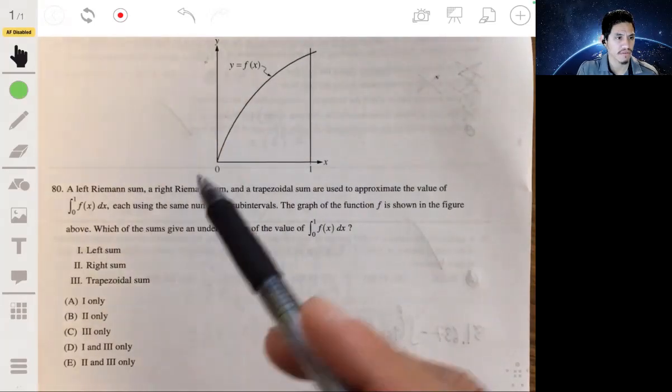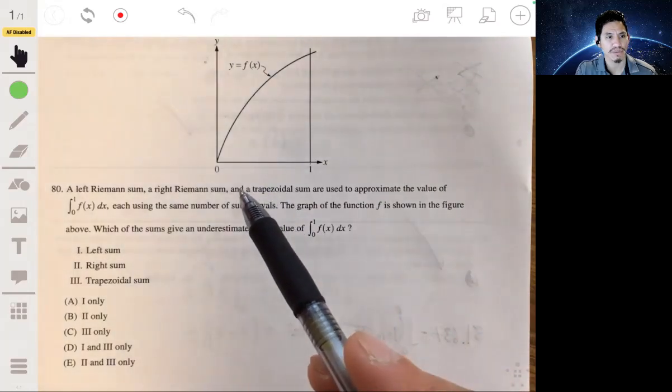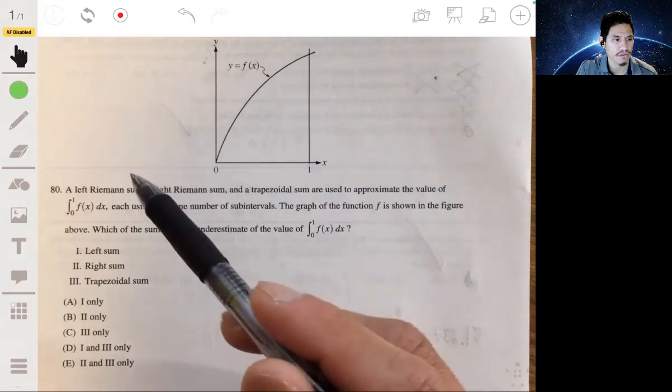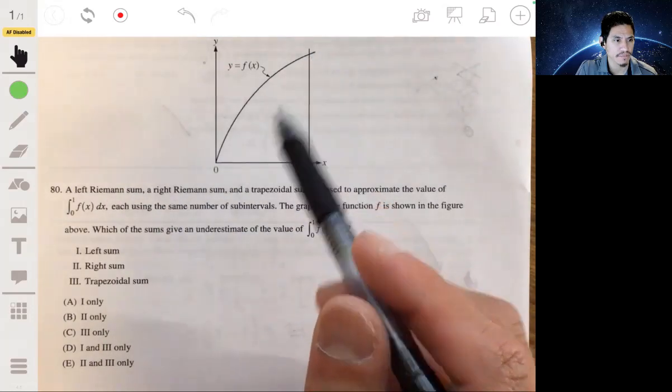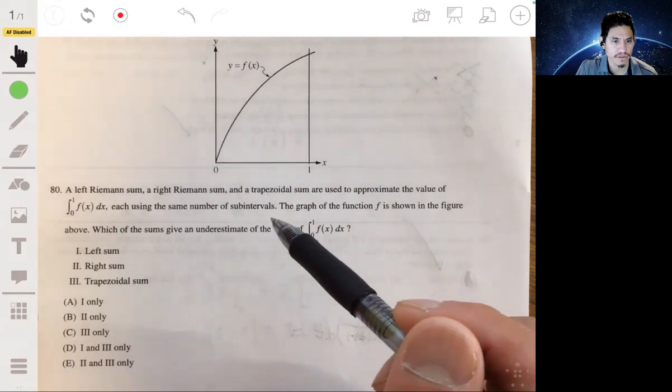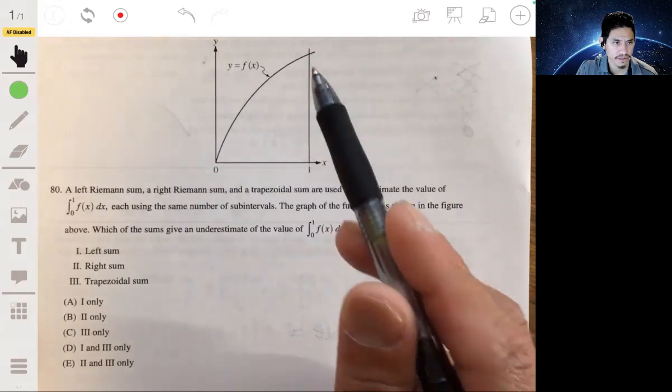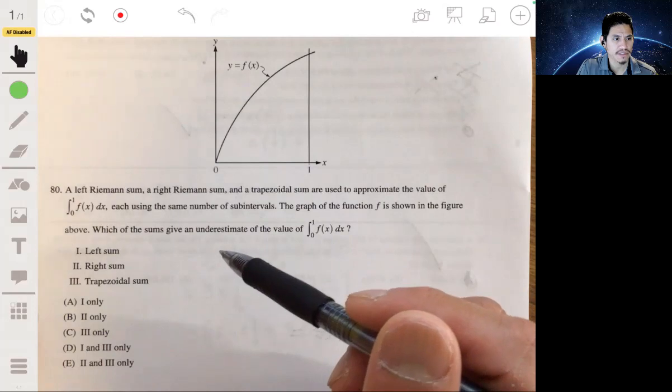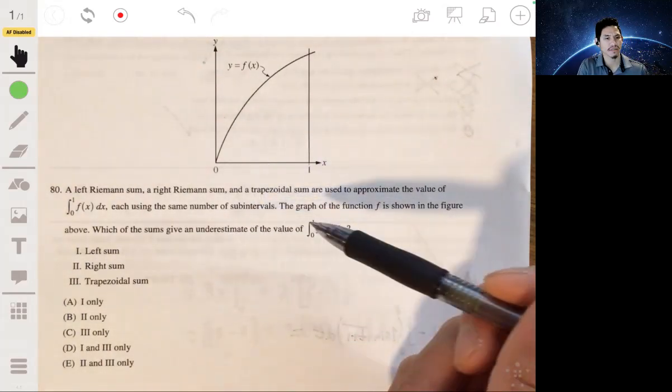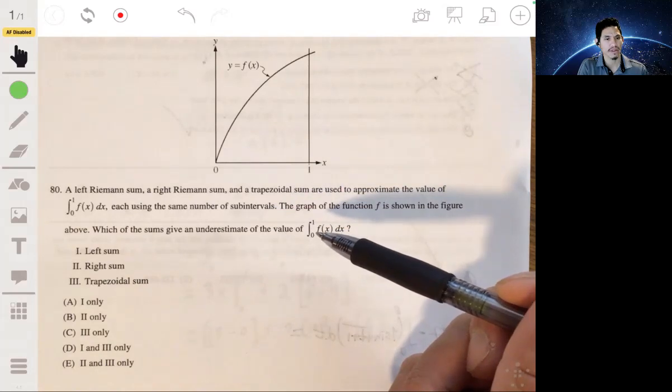All right, so problem 80. We have a left Riemann sum, a right Riemann sum, and a trapezoidal sum are used to approximate the value of the integral from 0 to 1 of f of x. Each of them are going to use the same number of subintervals, and here's the graph. We want to determine which of these sums will give you an underestimation of this integral.